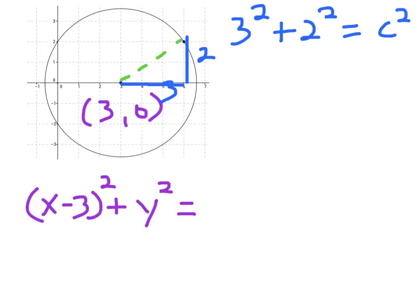And remember, that's what we wanted on this side of the equation. All right, so we've got 9 plus 4, 13 equals c squared. Awesome.